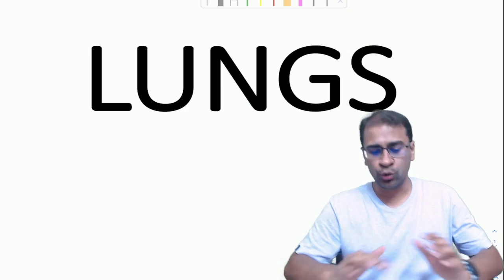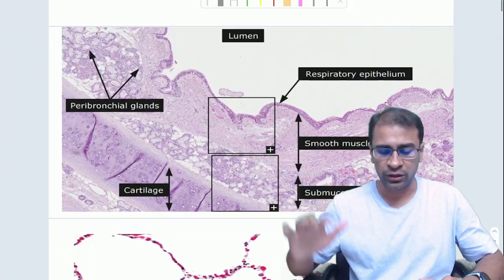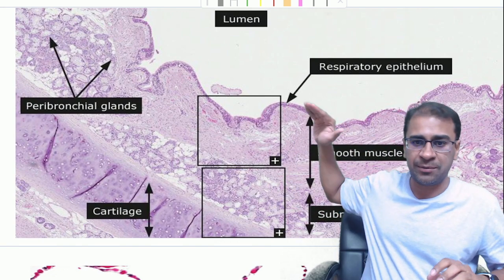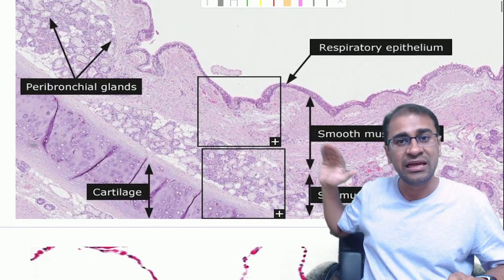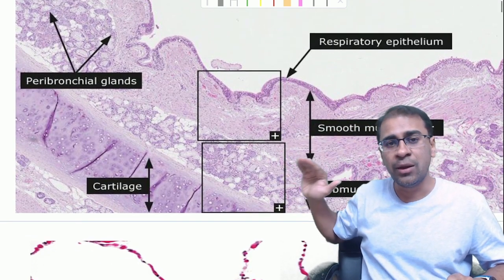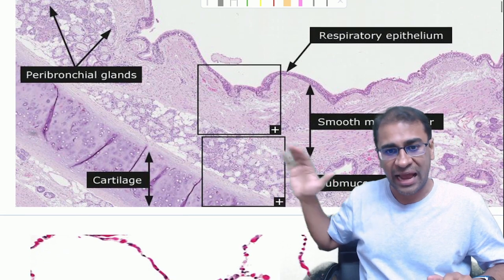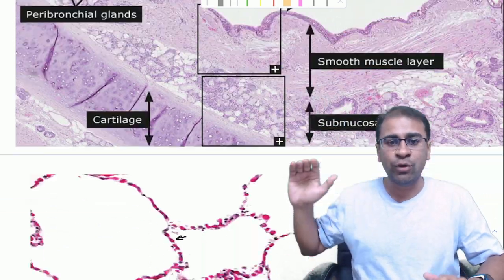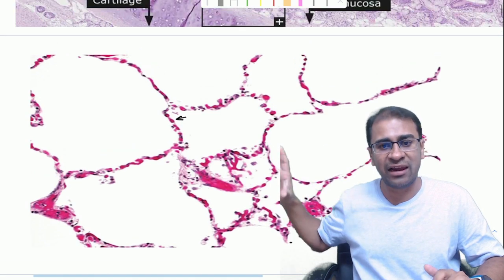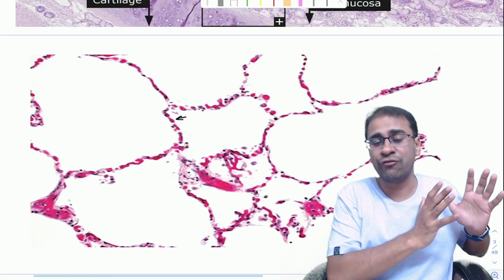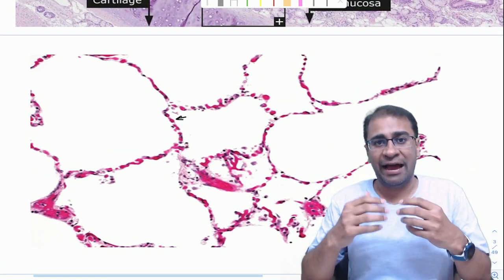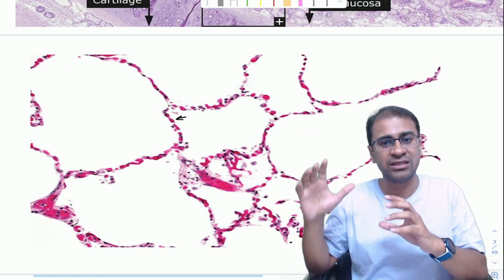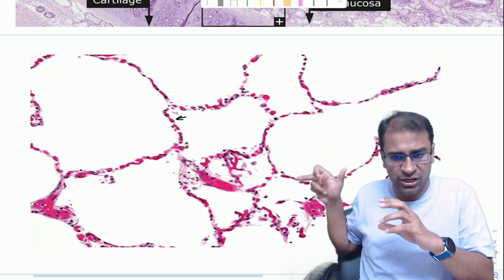Looking at the lungs, you must first notice the basic normal histology. In the bronchus, the normal histology is: respiratory epithelium, then the smooth muscle layer, then the peribronchial glands, then the cartilage layer. Remember, when you have a cartilage layer it means bronchus, and when you only have an alveolus it means you are dealing with the acinus or an alveolus. The red ones are the capillaries and in between there is a very fine interstitium.